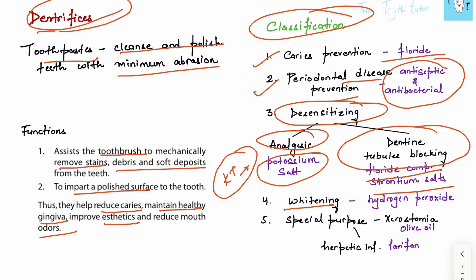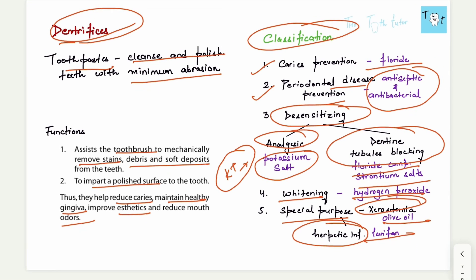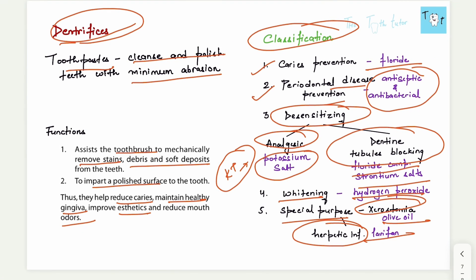We have whitening toothpaste containing hydrogen peroxide, and toothpaste for special purposes. For xerostomia, we have toothpaste containing olive oil, and for herpes infection, toothpaste containing lerifan. This is it for the chapter. It's generally asked for a short note - this should be sufficient. Thank you.